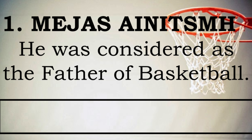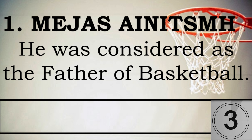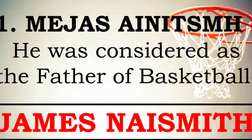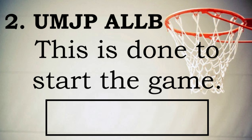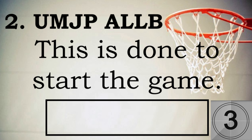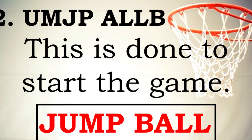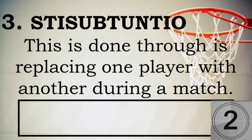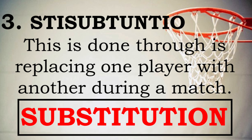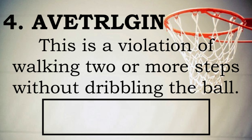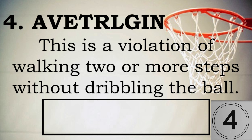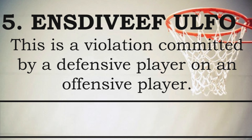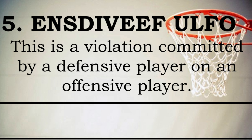Number 1: He was considered the father of basketball. Number 2: This is done to start the game. Number 3: This is done by replacing one player with another during a match. Number 4: This is a violation of walking two or more steps without dribbling the ball. Number 5: This is a violation committed by a defensive player on an offensive player.